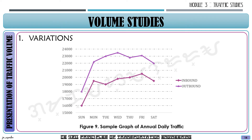Here is an example of a variation graph showing traffic volume inbound and outbound. When we say inbound, it refers to vehicles going into the counting zone. Based on this graph, there is slightly more inbound compared to outbound traffic. You can have this per day or per week depending on the study you are conducting.